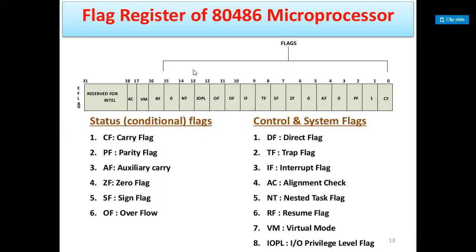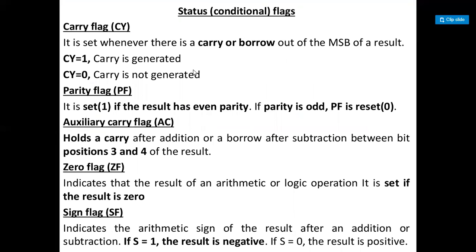The carry flag (CF): if CF is 1, carry is generated; if 0, no carry. It is set whenever there is a carry or borrow out of the MSB. The parity flag (PF): if set to 1, the result has even parity; if 0, parity is odd. The auxiliary carry flag (AF): if addition or subtraction generates a carry from the 3rd to 4th bit position, AF is set to 1.